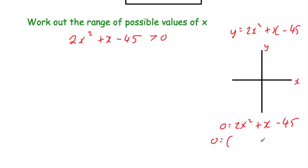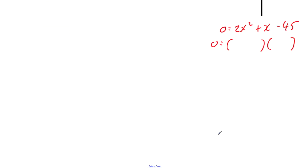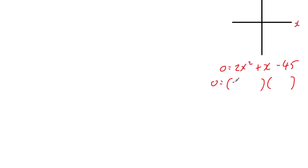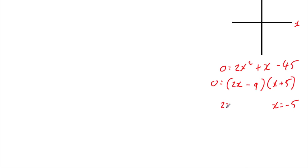Let's try to factorise. We have 0 equals two brackets, going for 2x and x. We want two numbers that multiply to minus 45 and give plus 1x in the middle when expanded. Trying plus 5 and minus 9: 2x times x is 2x squared, 2x times 5 is 10x, take away 9x is 1x, and minus 9 times 5 is minus 45. So x equals minus 5 from the first bracket, and from 2x minus 9 equals 0, adding 9 and dividing by 2 gives x equals 4.5.